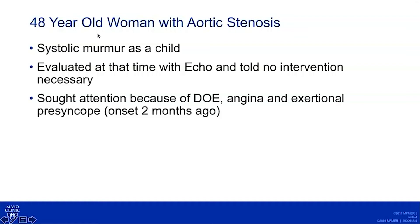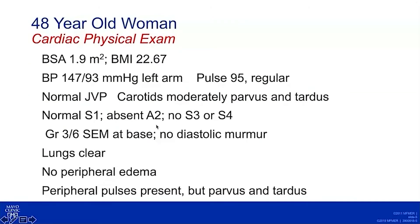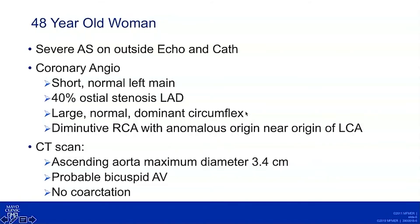This is a 48-year-old woman who presented initially with aortic stenosis. She was known to have a systolic murmur as a child. She was evaluated with echo and told no intervention was necessary, and then never had anything followed until she developed dyspnea on exertion, angina, and exertional presyncope. She had those symptoms for about two months before being seen by a cardiologist, who found signs of significant severe aortic stenosis on clinical examination.